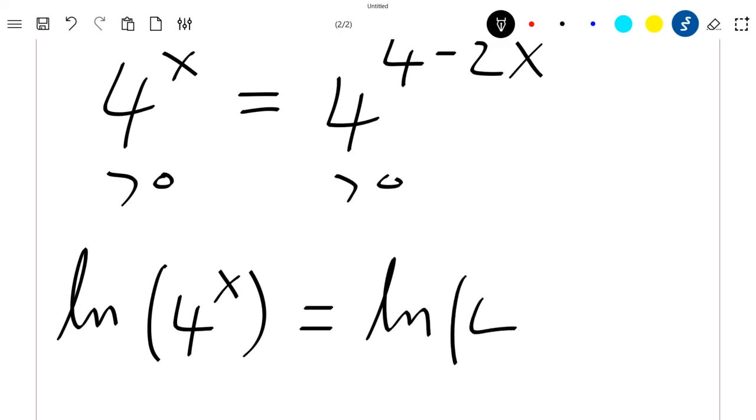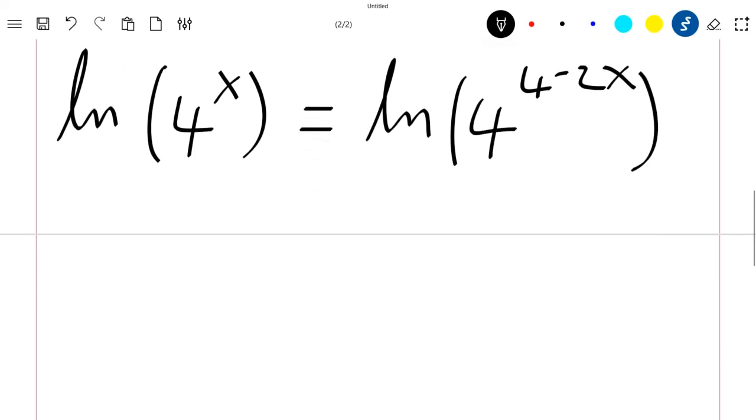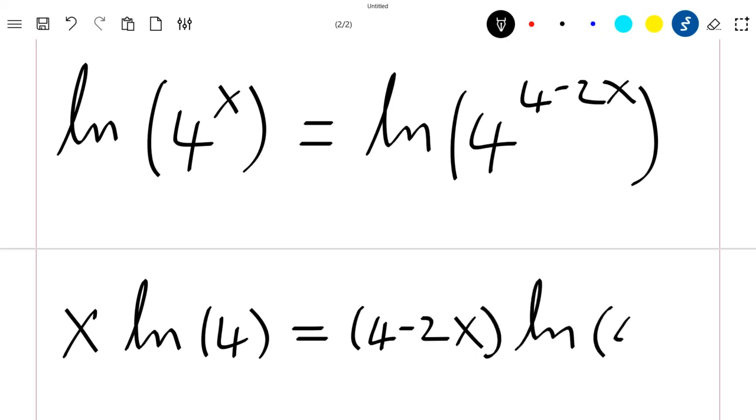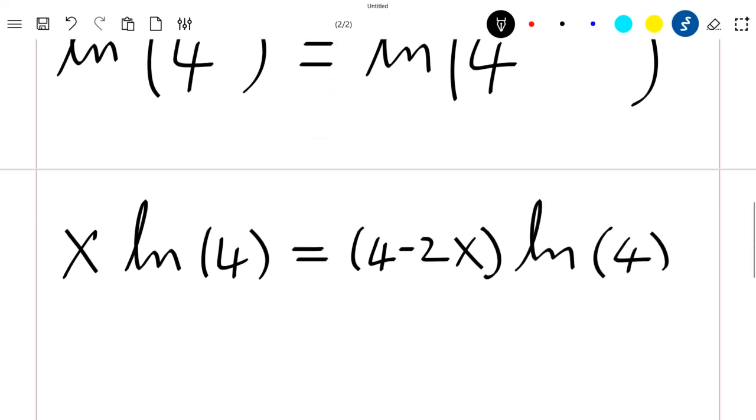Now using the properties of the ln function, this is in fact x times ln of 4, which is equal to (4 minus 2x) times ln of 4.